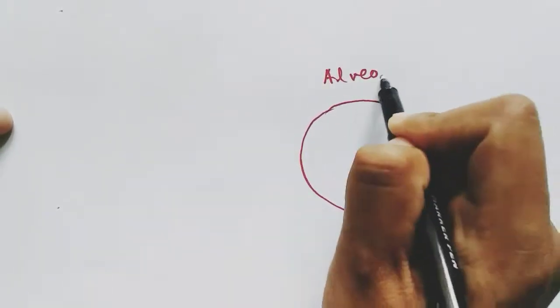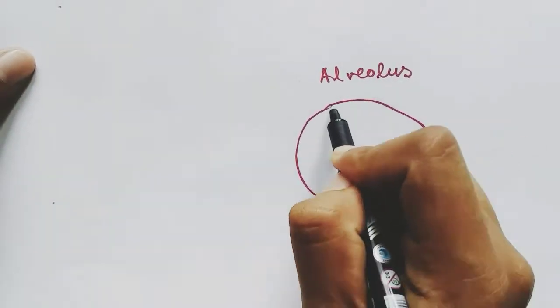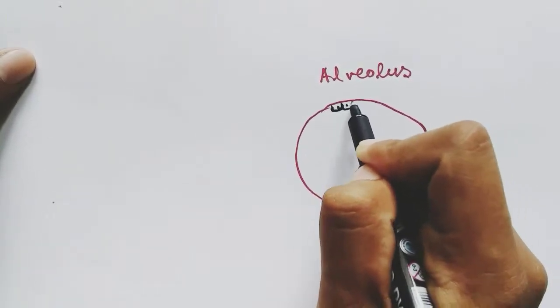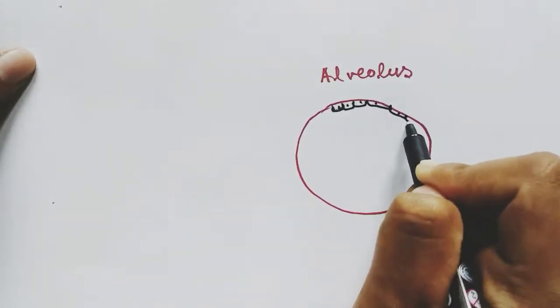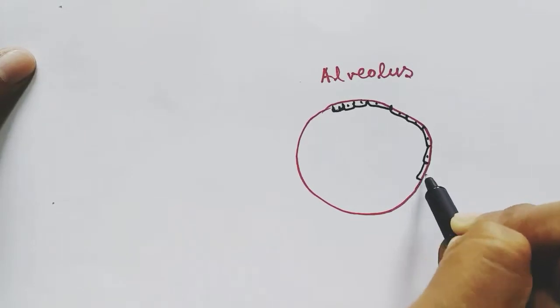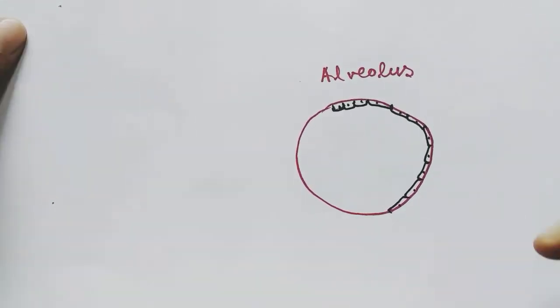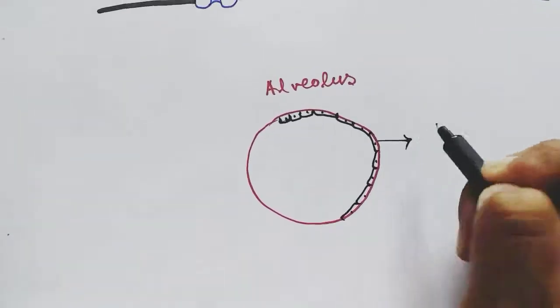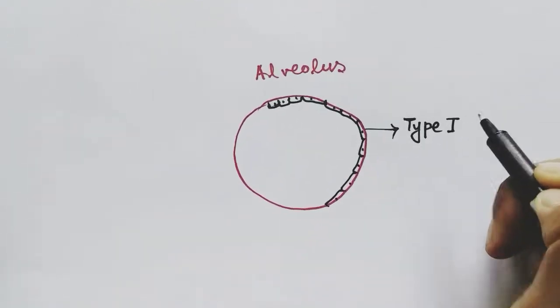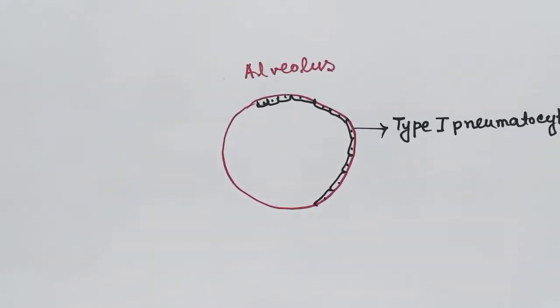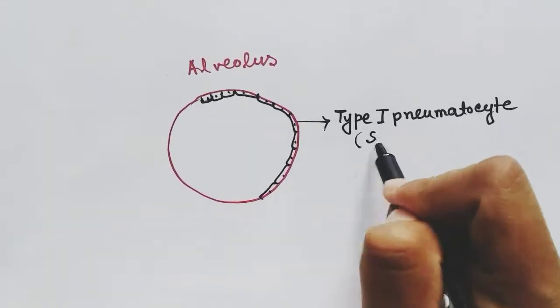The cells of the alveolus are very thin and squamous epithelial. These are thin to help in exchange of the air, and these cells are called type 1 pneumatocytes. They are squamous in nature.